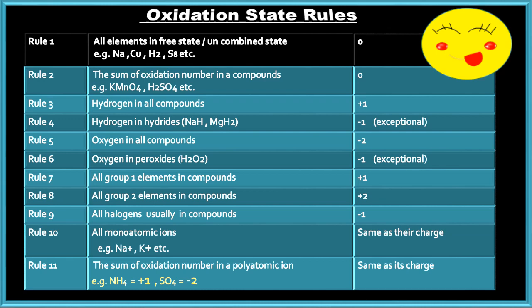Rule No. 7: All Group 1 elements in a compound have a plus one oxidation state. Rule No. 8: All Group 2 elements in a compound have a plus two oxidation state. Rule No. 9: All halogens — fluorine, chlorine, bromine, and iodine — usually have a minus one oxidation state in a compound.